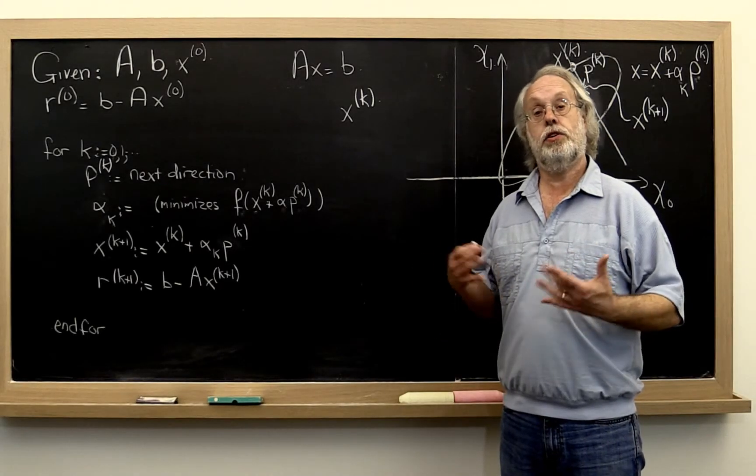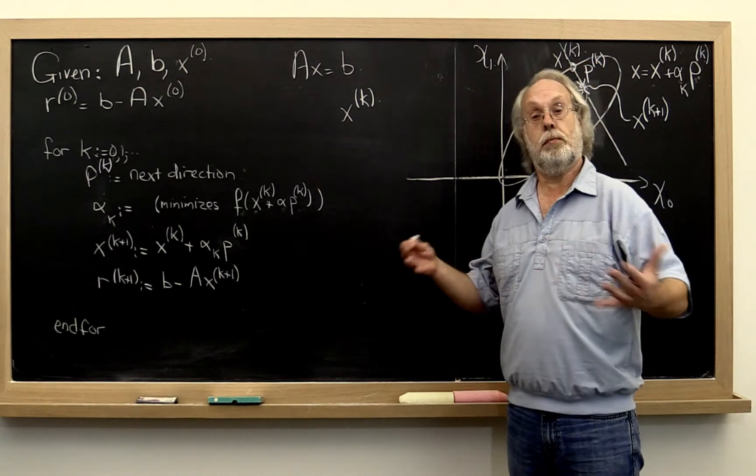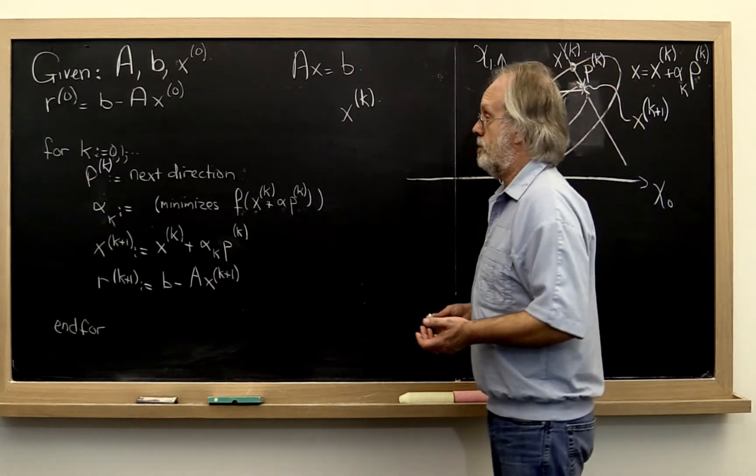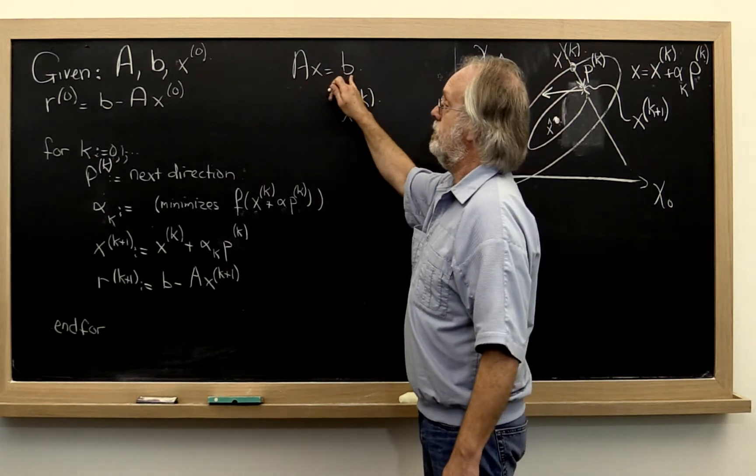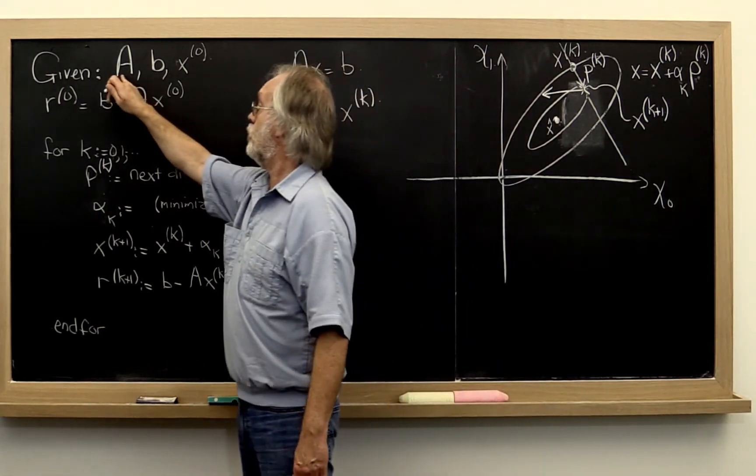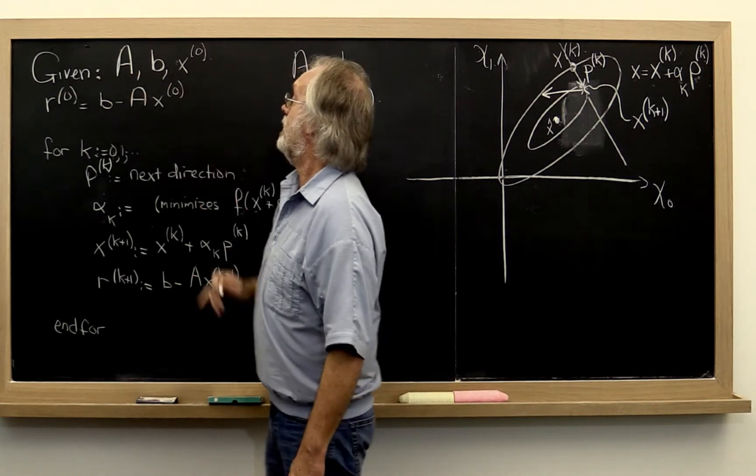Let's take these ideas and turn them into something that approximates an algorithm. So what do we start with? Well, we want to solve Ax equals B. So we're given matrix A and right-hand side B.